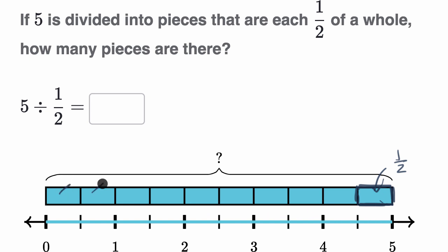And we see that right over here. One half, two, three, four, five, six, seven, eight, nine, 10 halves make five wholes. So this is going to be equal to 10.